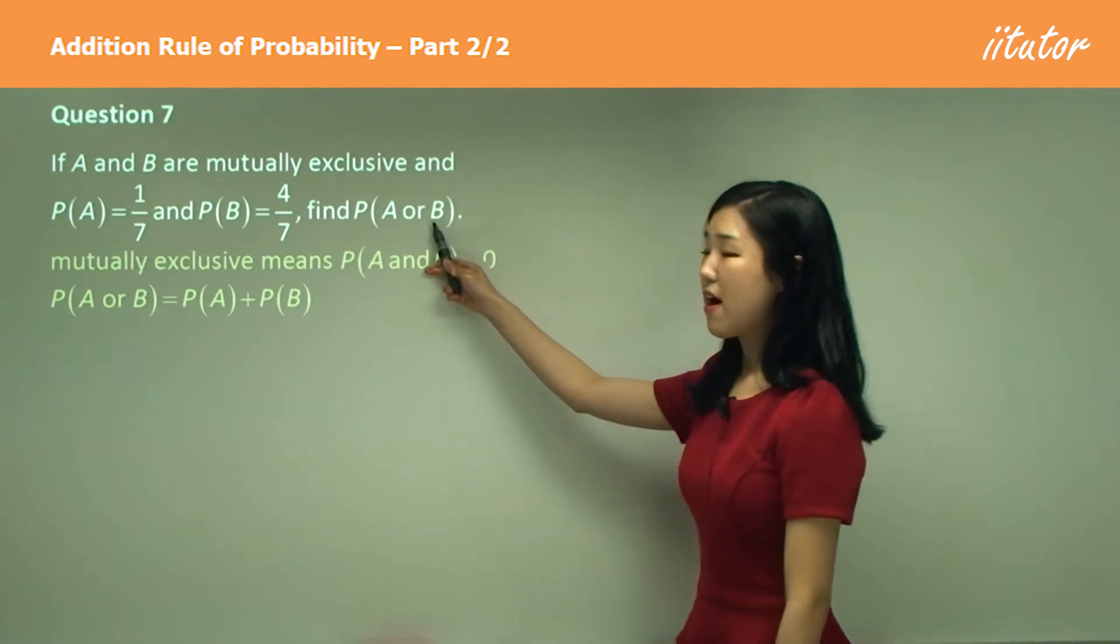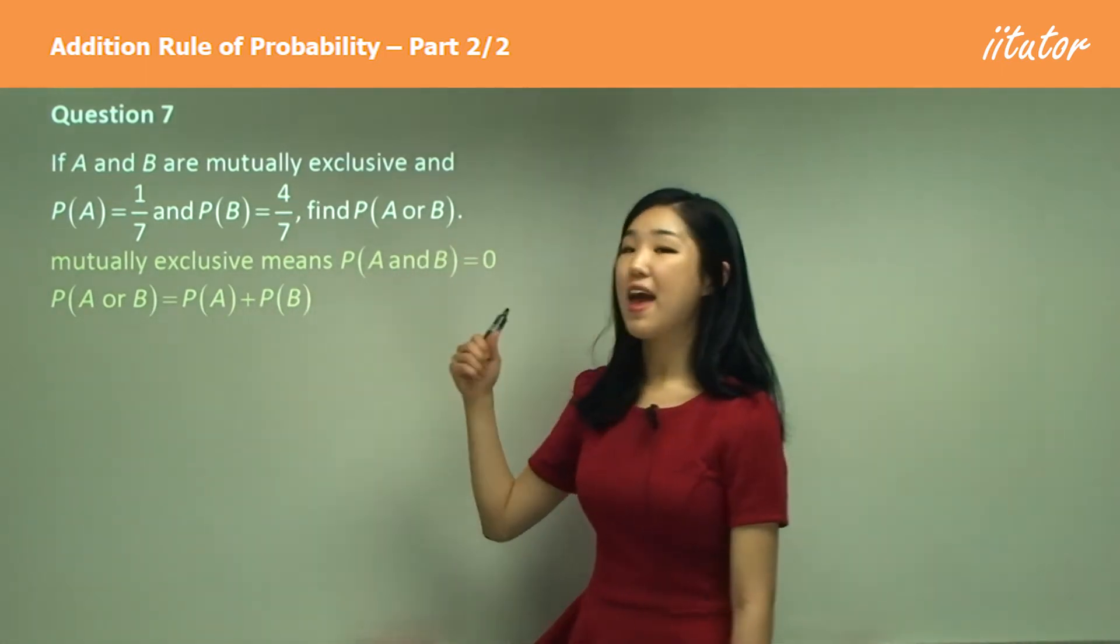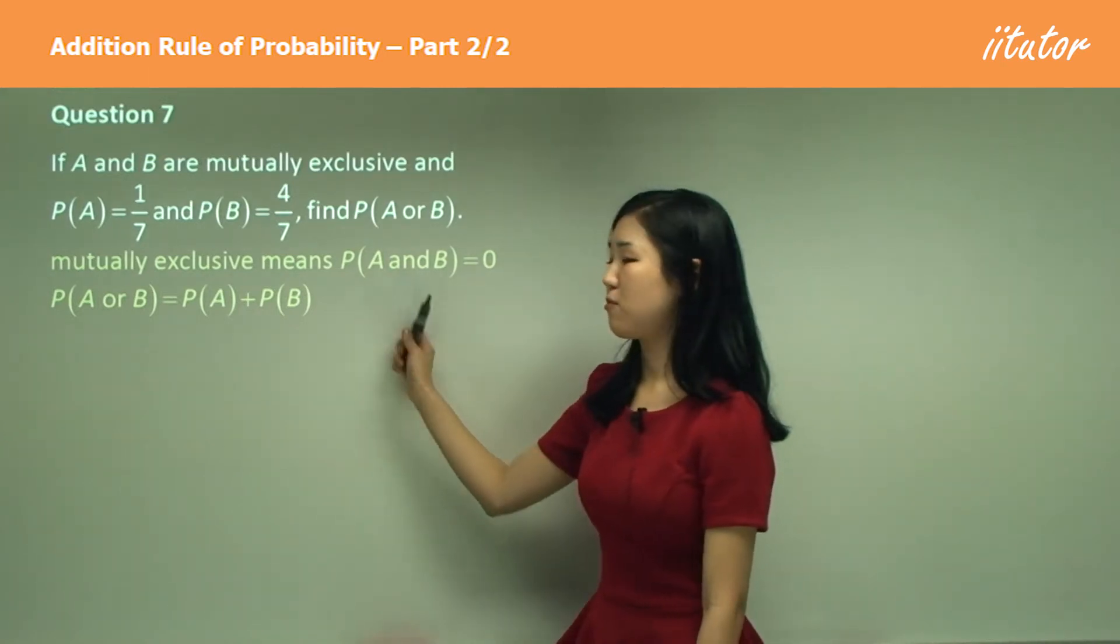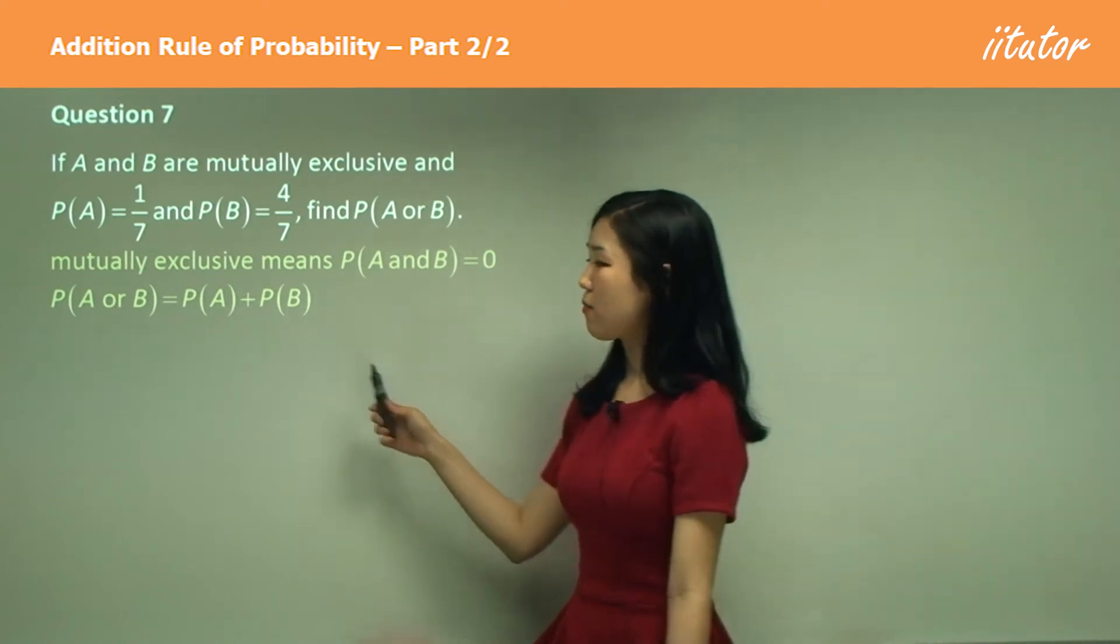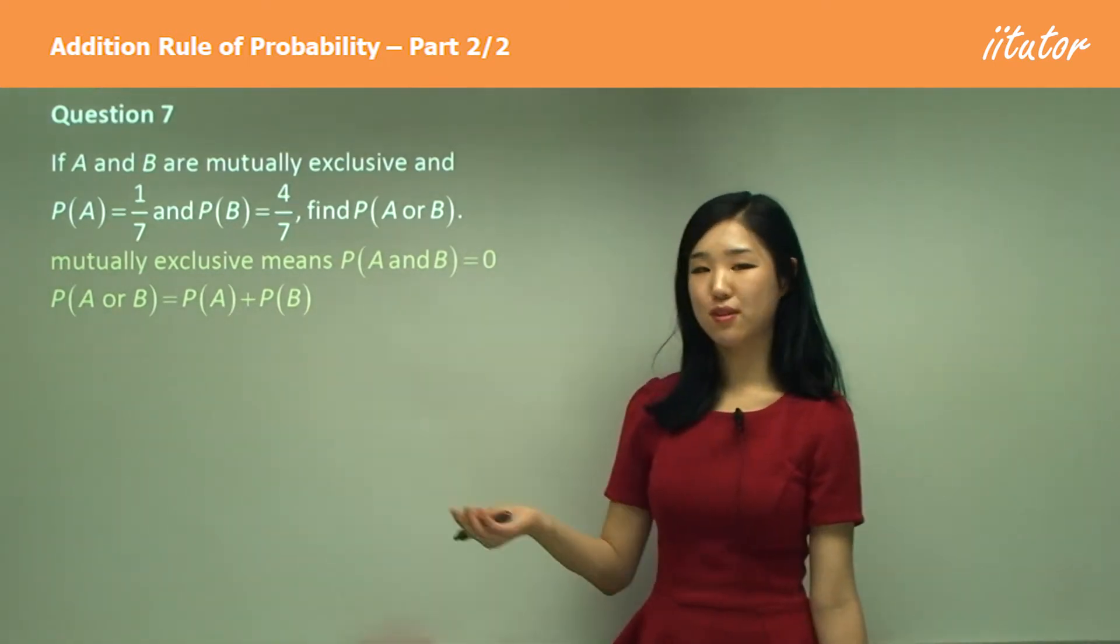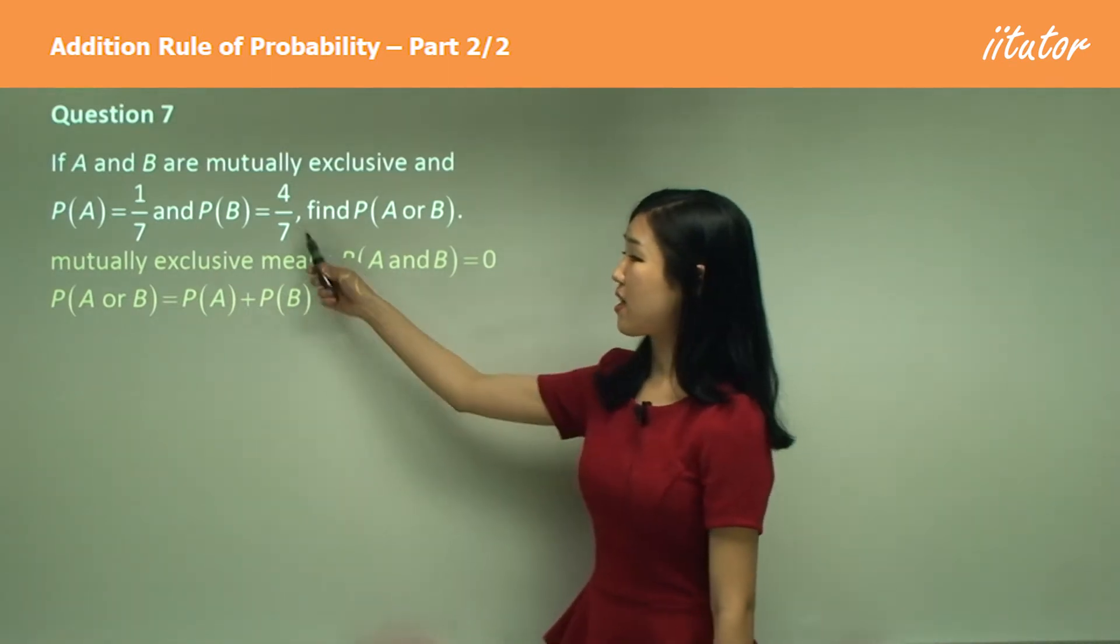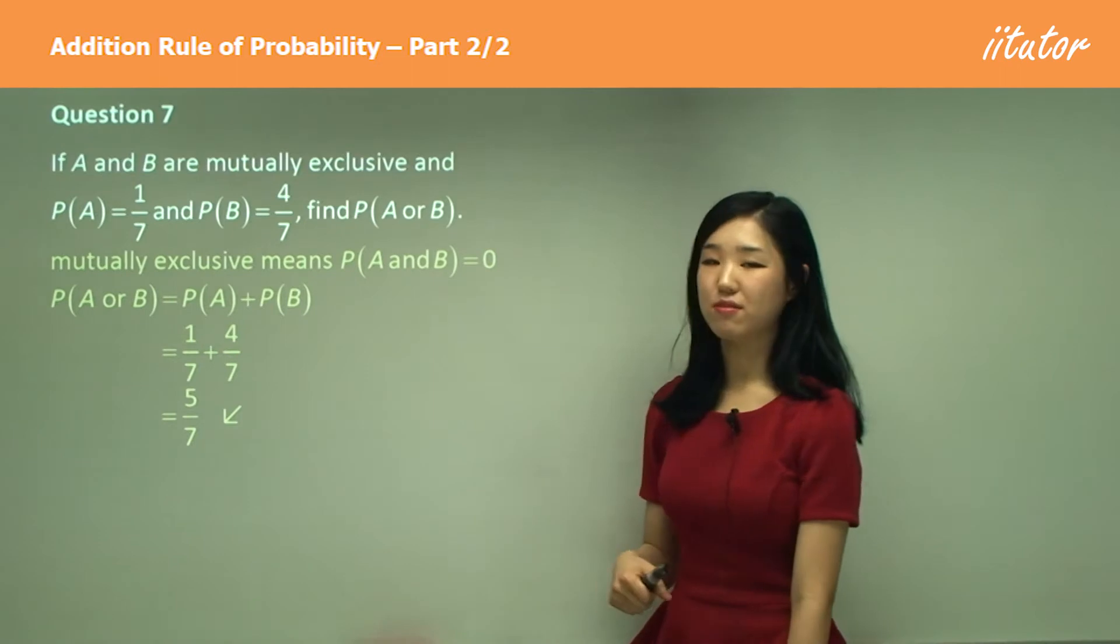So therefore, if I find probability of A or B, because probability of A and B is zero, I don't have to subtract anything. So probability of A or B in this case is just the probability of A plus the probability of B. And they give you the outcome, so just add it together. You should get five on seven.